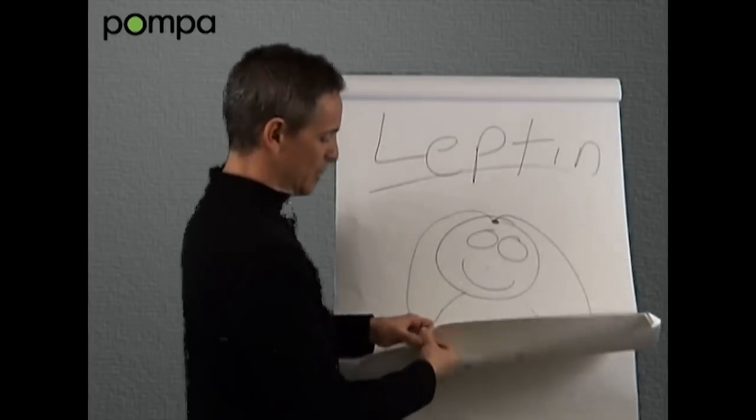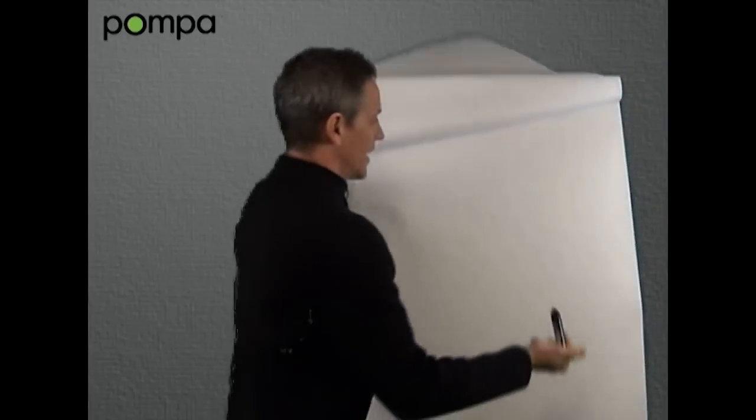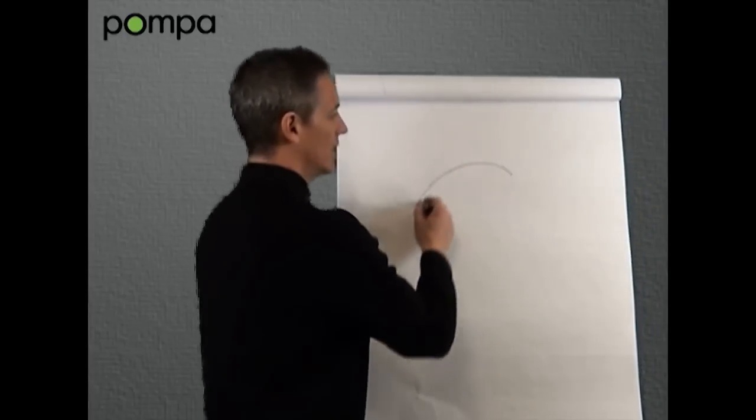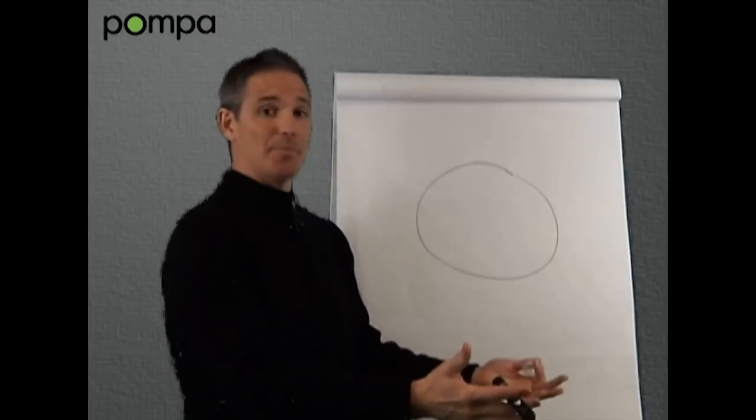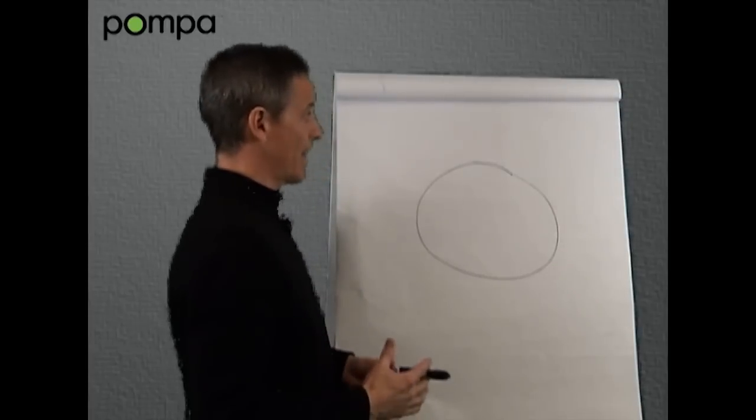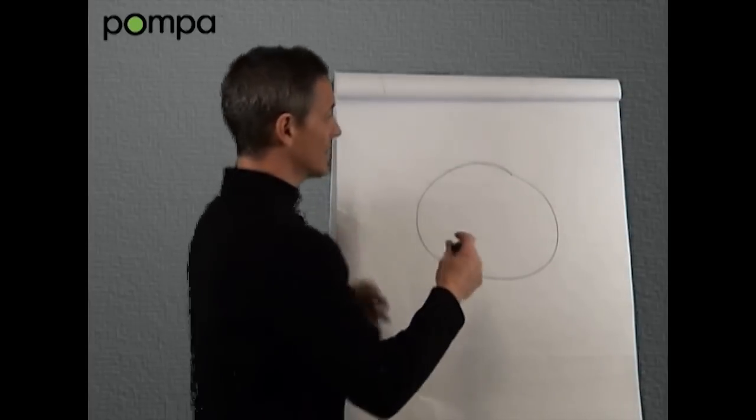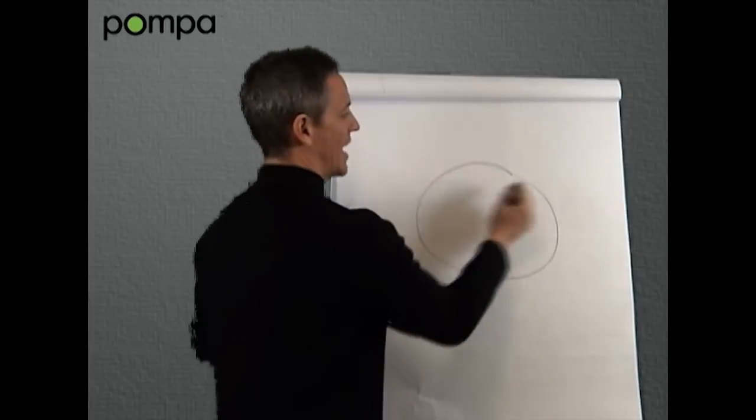We're going to take it down to the micro level. Bring out your electron microscopes, folks. We're taking it down to the cell in the brain of the hypothalamus. The hypothalamus tells you to stop eating. And that's what the leptin hormone does. It also tells you to burn your fat for energy. This hormone is the key to really understanding this whole process.